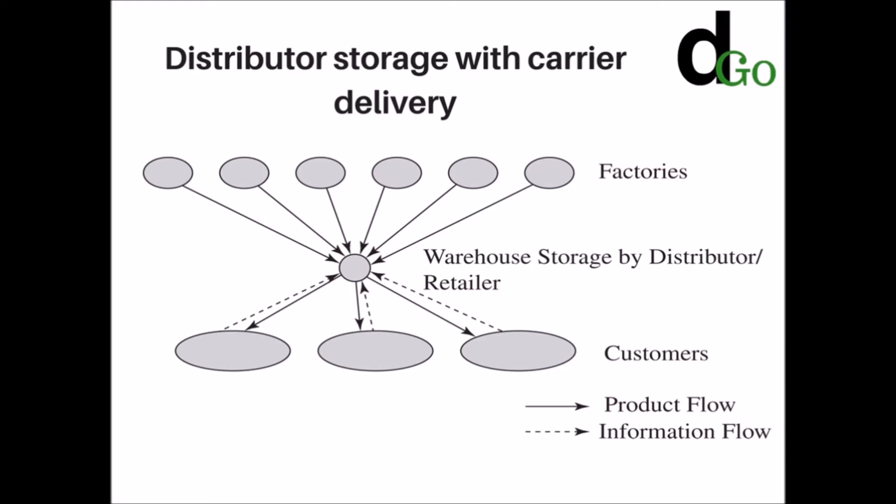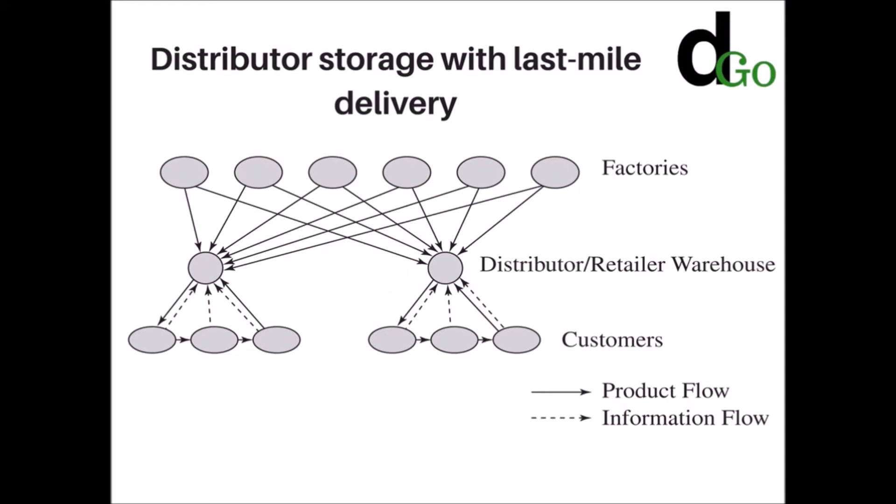The next option is distributed storage with carrier delivery. Here, inventory is not held by the manufacturers; it is held by distributors or retailers in intermediate warehouses. Package carriers are used to transport products from these intermediary locations to the final customer. Last-mile delivery refers to delivering the product directly to the customer's home instead of using a package carrier. Grocery services like Amazon Fresh, Peapod, and Tesco use this method.